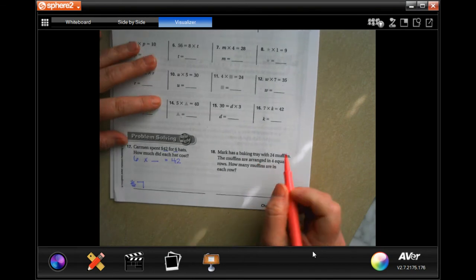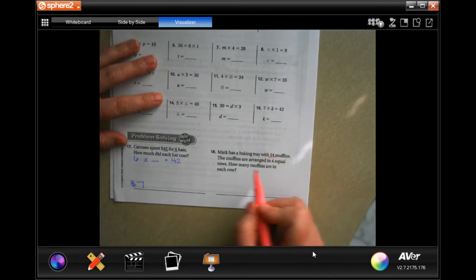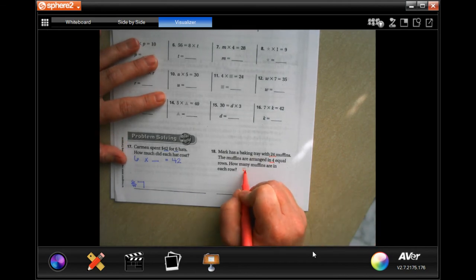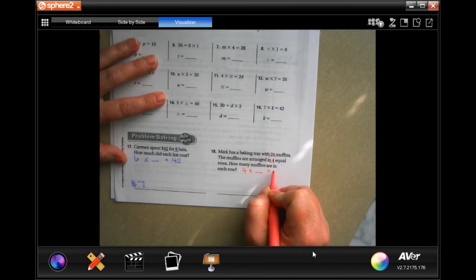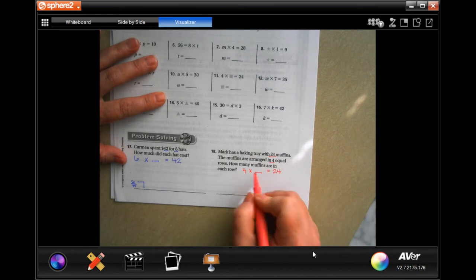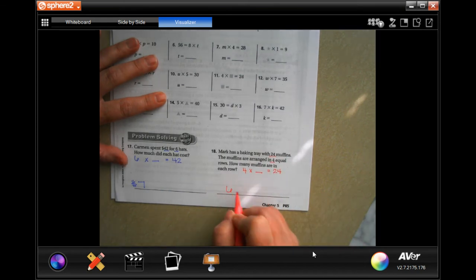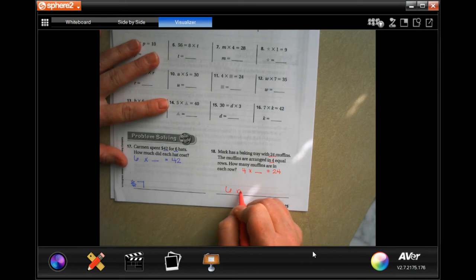Mark has a baking tray with 24 muffins. The muffins are arranged in four equal rows. How many muffins are in each row? So, four times what equals 24? Well, four times six is 24, and then six muffins.